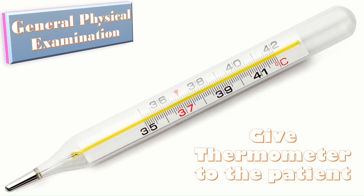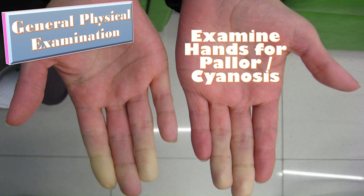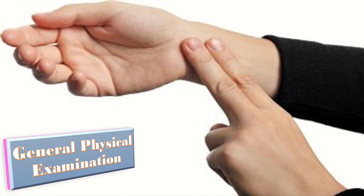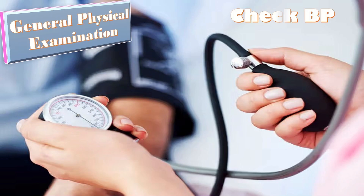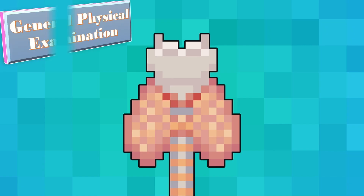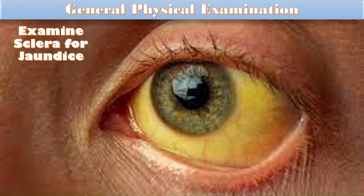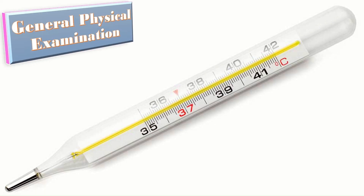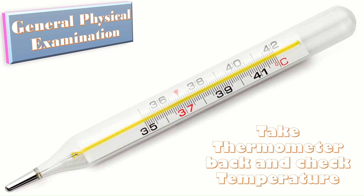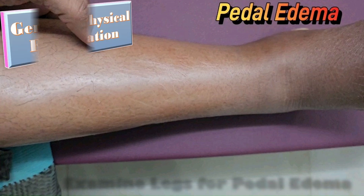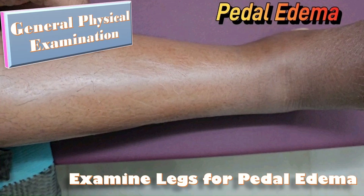After taking detailed history, perform general physical examination. After introduction, give the thermometer to the patient. Examine the hands for pallor and cyanosis, check pulse and blood pressure. As hyperthyroidism is one cause of hydrops, perform a complete thyroid examination. Examine the conjunctiva for pallor and sclera for jaundice. Check temperature, ask the patient to lie down comfortably, and examine the legs for pedal edema and varicosities.